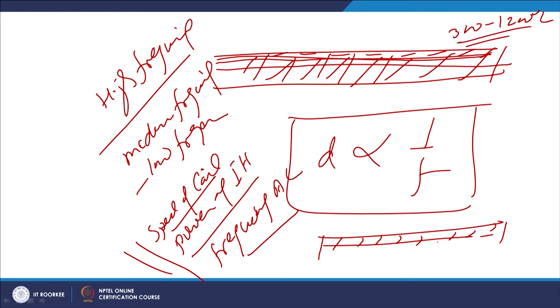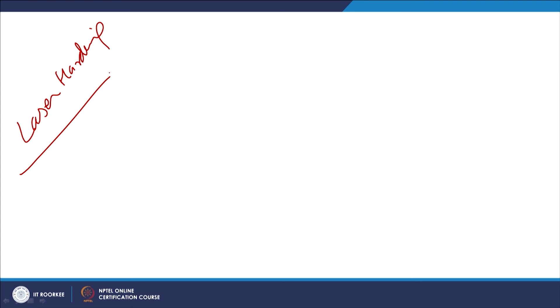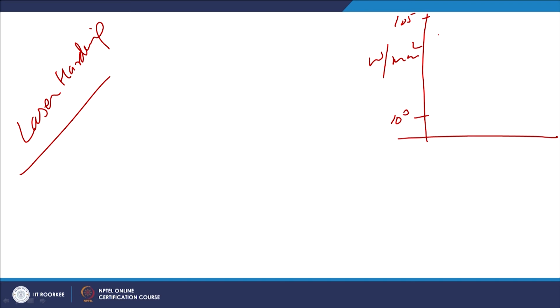Induction hardening primarily uses the principle of austenite-to-martensitic transformation for improving hardness and mechanical properties. The next method is laser hardening, which uses very high energy density in the range of 10³ to 10⁵ W/mm².